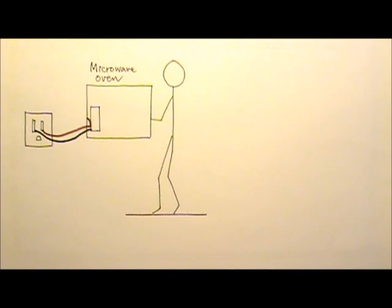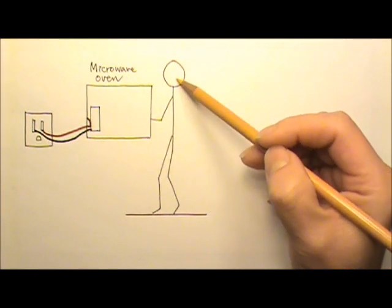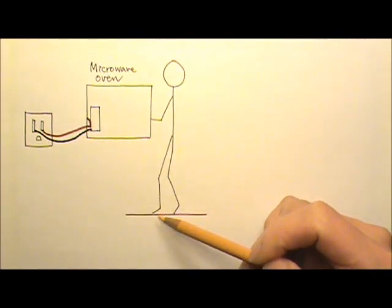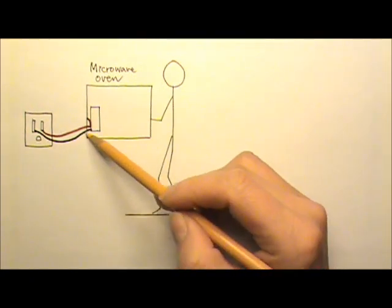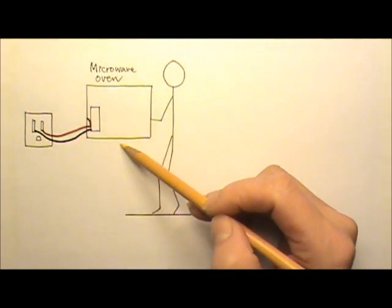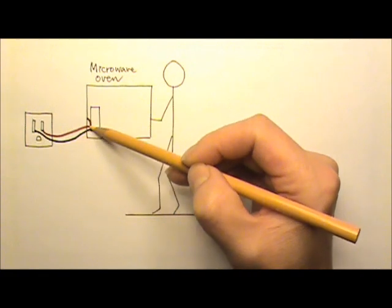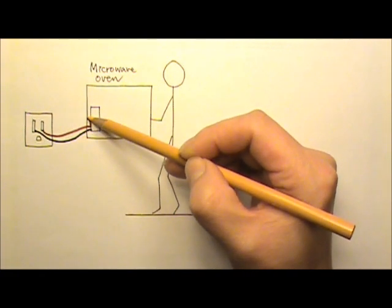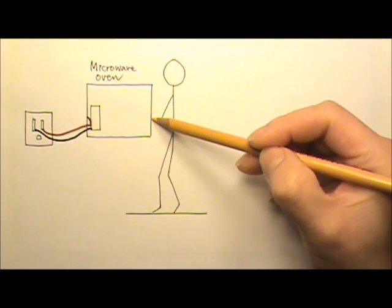For electric shock to happen, there has to be a closed path for current to flow through a person. For example, this microwave oven has a faulty connection between its metal case and a hot or live wire. When a person touches the metal case, there can be a current that flows through the person to the ground.